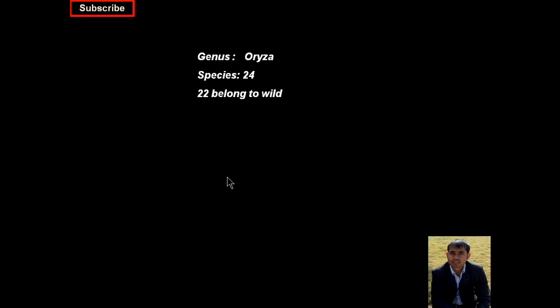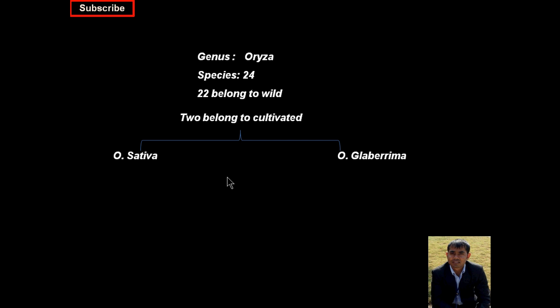The grain will grow and become the rice grain, which is known as caryopsis. So these were some aspects of the botany of rice. Now I will explain what are the different species. Rice has the genus Oryza, and this Oryza has 24 different species — among these, 22 belong to wild species and only two are cultivated: Oryza sativa and Oryza glaberrima.